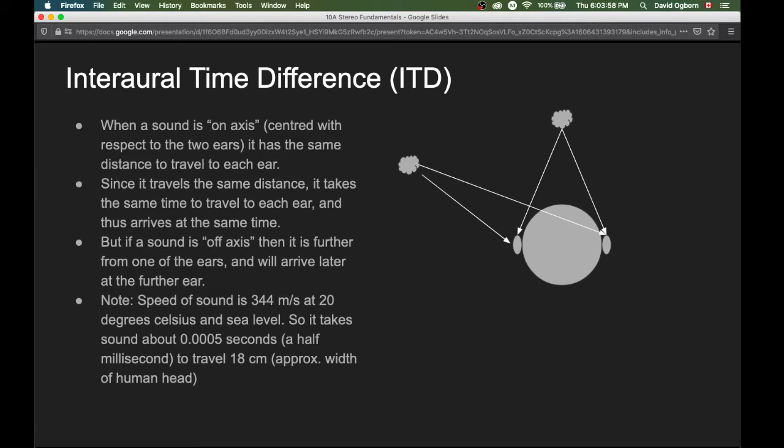In this connection, we should note that the speed of sound is 344 meters per second at 20 degrees Celsius and sea level. This can be a useful figure to remember. So given those figures, it takes sound about 0.0005 seconds, a half millisecond, to travel 18 centimeters, the approximate width of a human head.